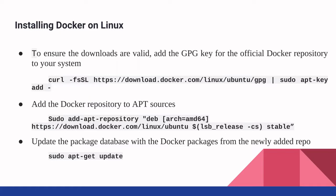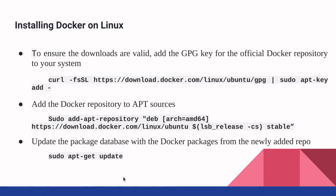If you haven't done that, I have included the required commands that you can use on Linux OS to get Docker installed. The first thing you have to do is ensure the downloads are valid and add the GPG key for the official Docker repository for your system. For that, you can use this curl command. Then to add the Docker repository to apt-sources, you can use this apt-repository command mentioned in the second bullet point. Then to update the package database with the Docker packages from the newly added repo, you can use this sudo apt-get update command.